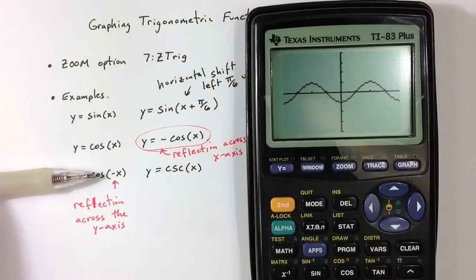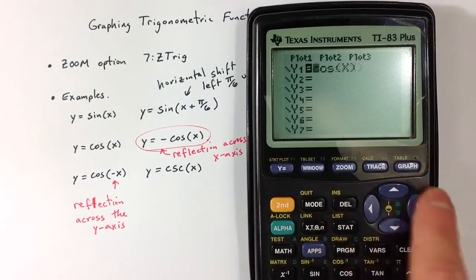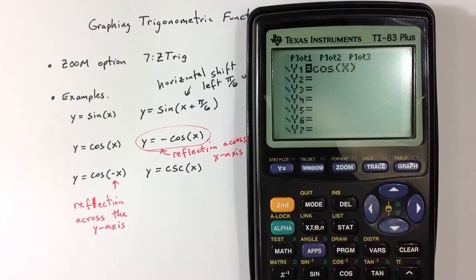When the negative sign occurs inside the cosine function, it's going to be a reflection across the y-axis. So we can see what that looks like. Let me get rid of that negative sign and add a negative sign inside here.